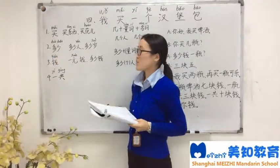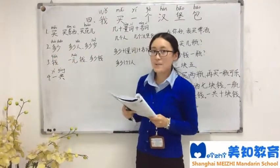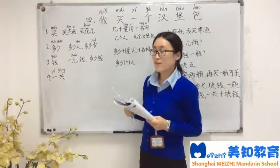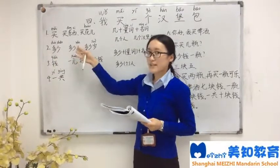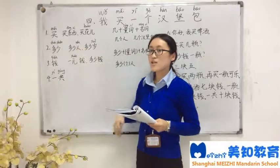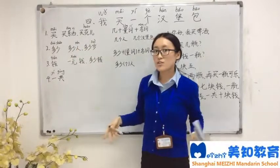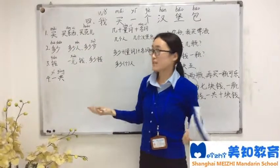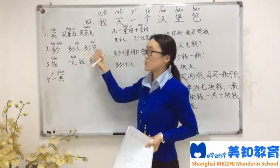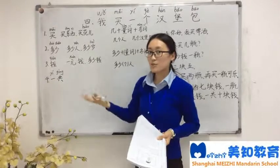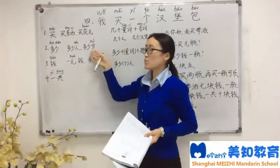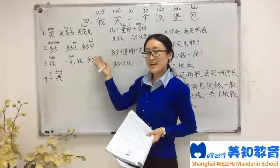Next: 多少. 多少 means 'how many' or 'how much'. For example, 多少人 means 'how many people'. 多少岁 means 'how old'. 你多少岁了?